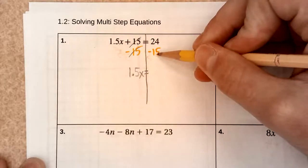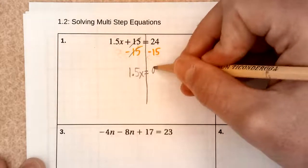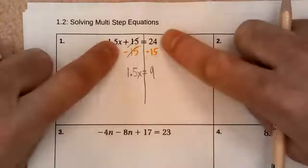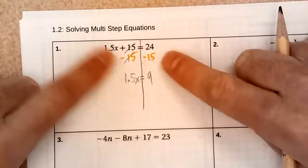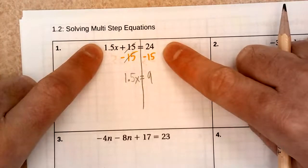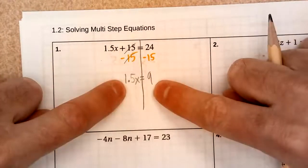24 minus 15, it's going to leave me with 9. Okay, that's good. Now I have a single step equation. I used one inverse, simplified my equation. Now it's a single step. Now I have to undo this multiplication.